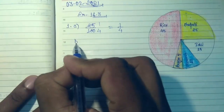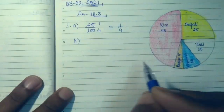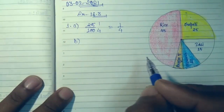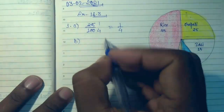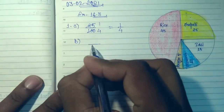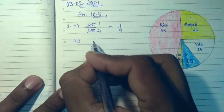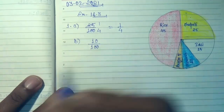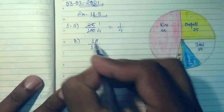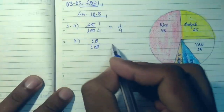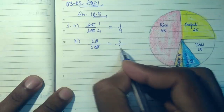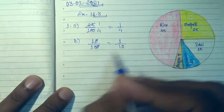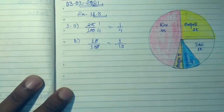Now question (b): What fraction of the total children like chawmin? Chawmin is 10. Total children are 100, and out of 100, 10 children like chawmin. You can cancel the zeros, so the fraction is 1 upon 10.